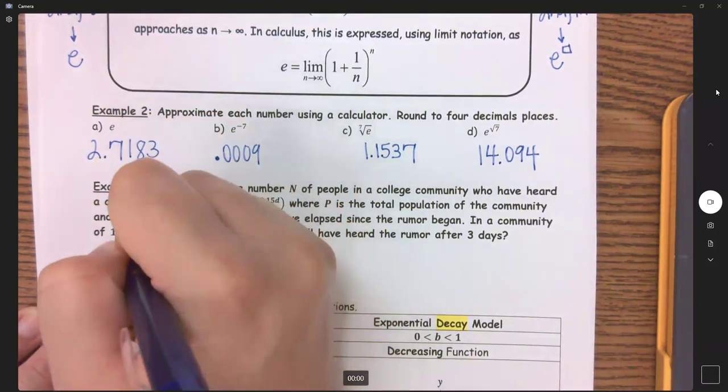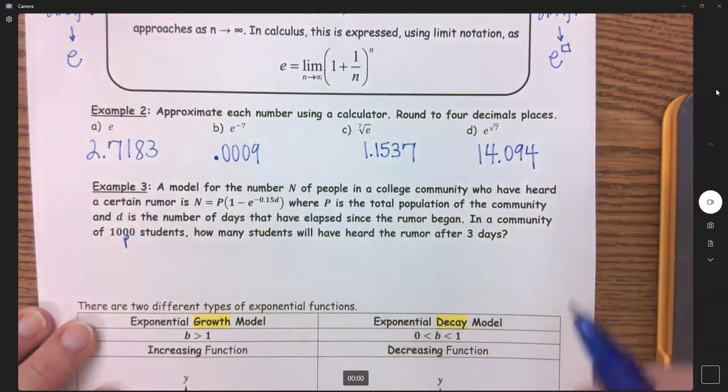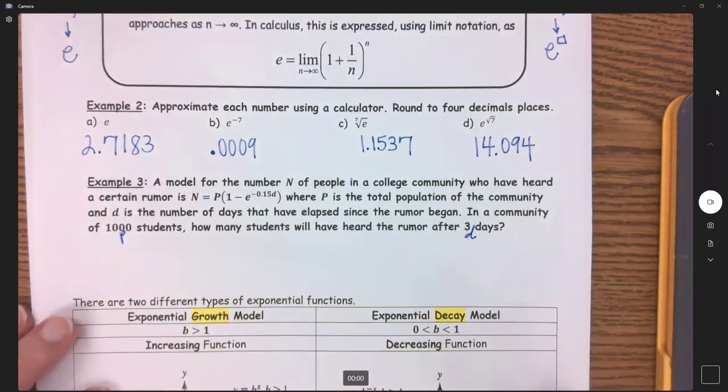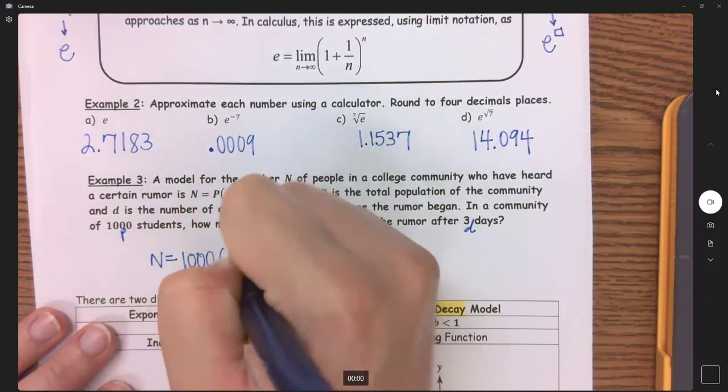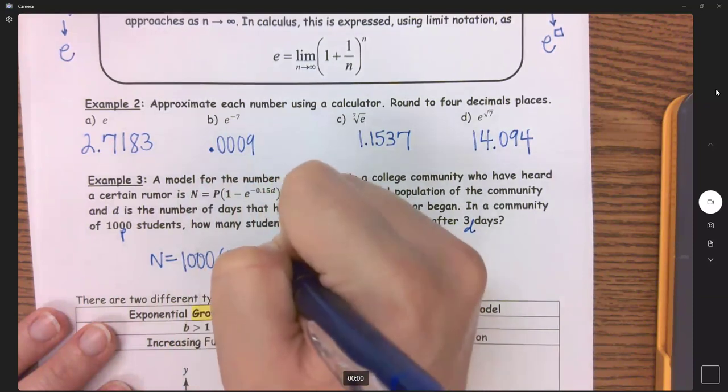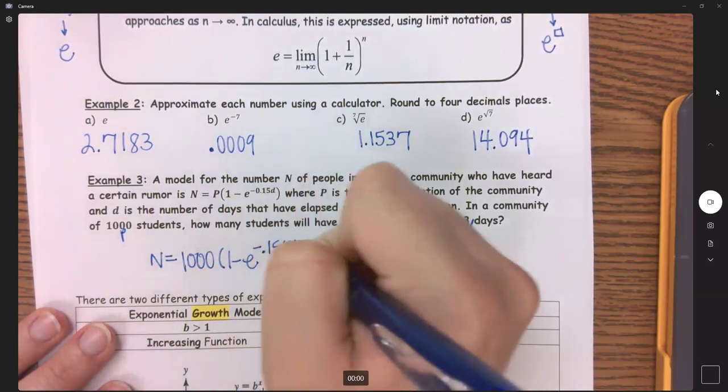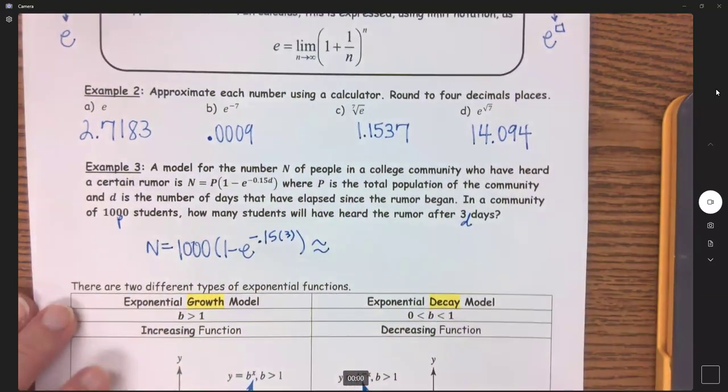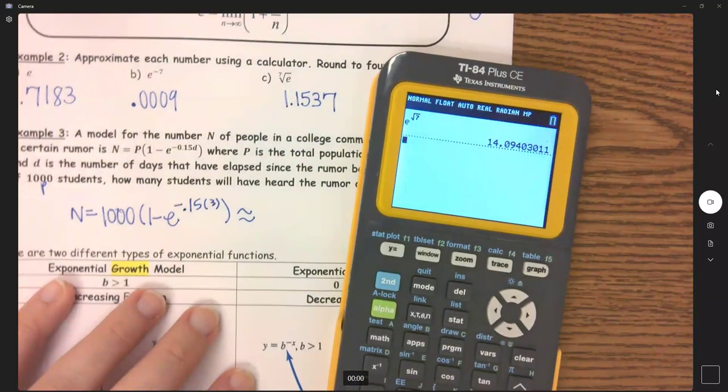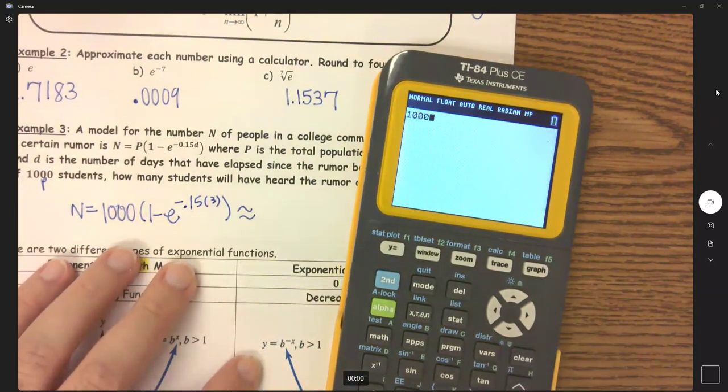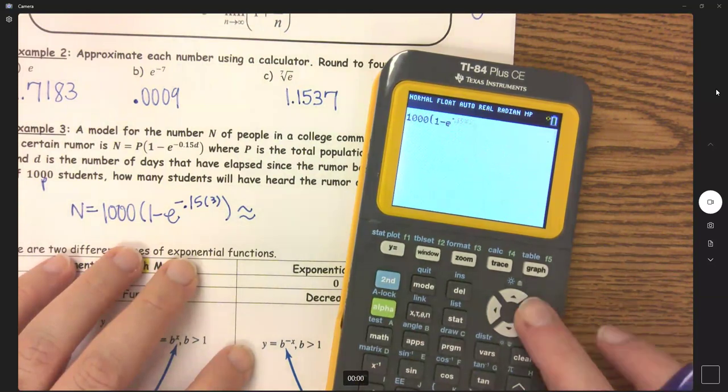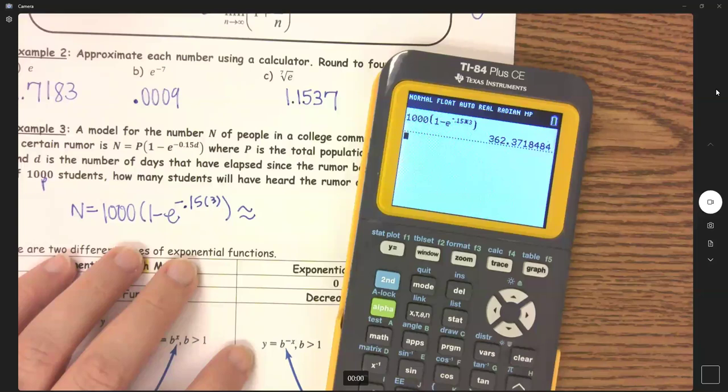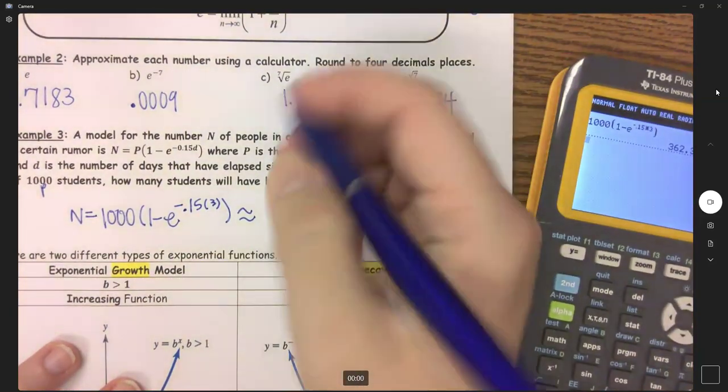So here is my p, and here is my d. So we have n equals 1,000, 1 minus e to the negative 0.15 times 3. Okay, calculated work. And because this is talking about people, we are going to round to the nearest person. So we get about 362 students.